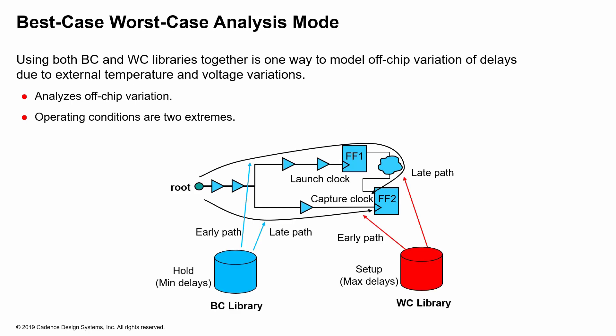You're reading the max libraries for max and min libraries for min. From the graphic, both the early and late paths for hold analysis are calculated via the best-case library, and the min delays from the SDCs are the ones used for analysis. For the worst-case library for setup, the worst-case library is being used for both the late path and the capture clock path, and the max delays in your constraints are what's used for the analysis.